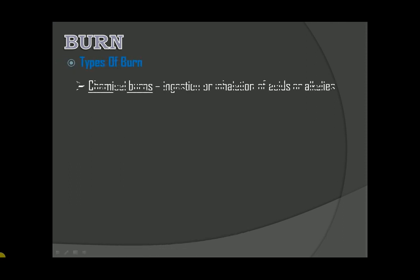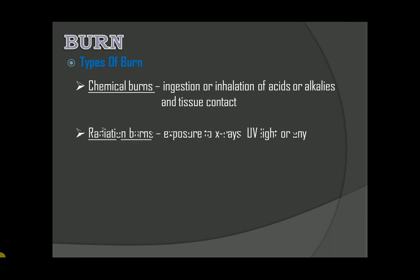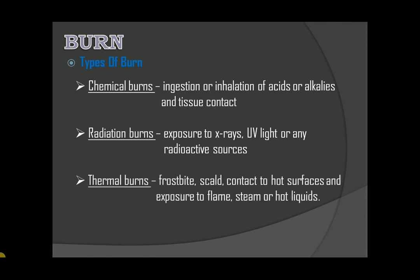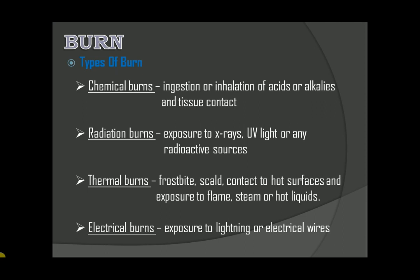Types of burn. First, we have chemical burns — the ingestion or inhalation of acids or alkalis and tissue contact. Next is radiation burns, which is the exposure to x-rays, UV light, or any radioactive sources. Next is thermal burns, like frostbite, scald, contact to hot surfaces, and exposure to flame, steam, or hot liquids. Lastly, we have electrical burns — exposure to lightning or electrical wires.